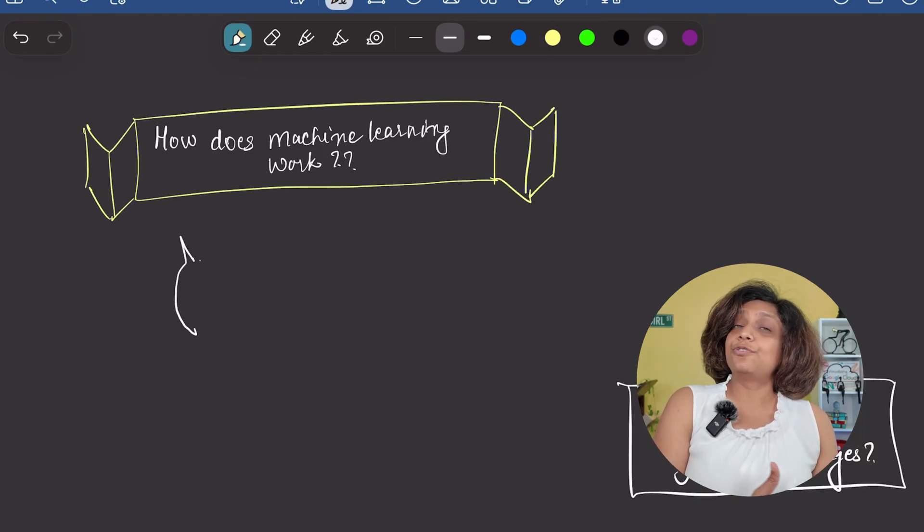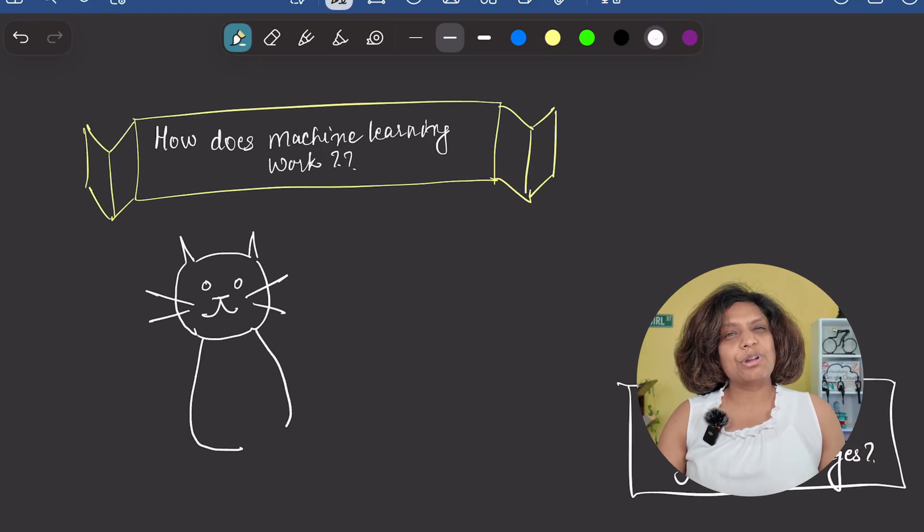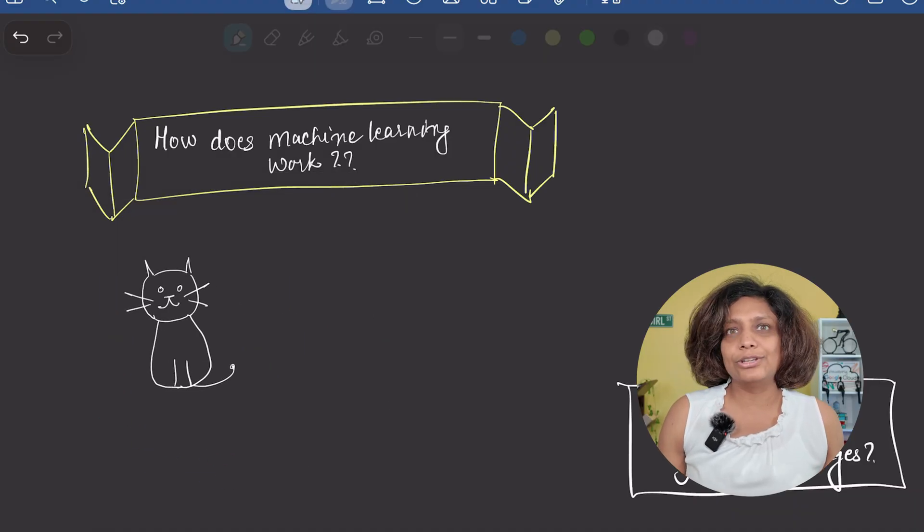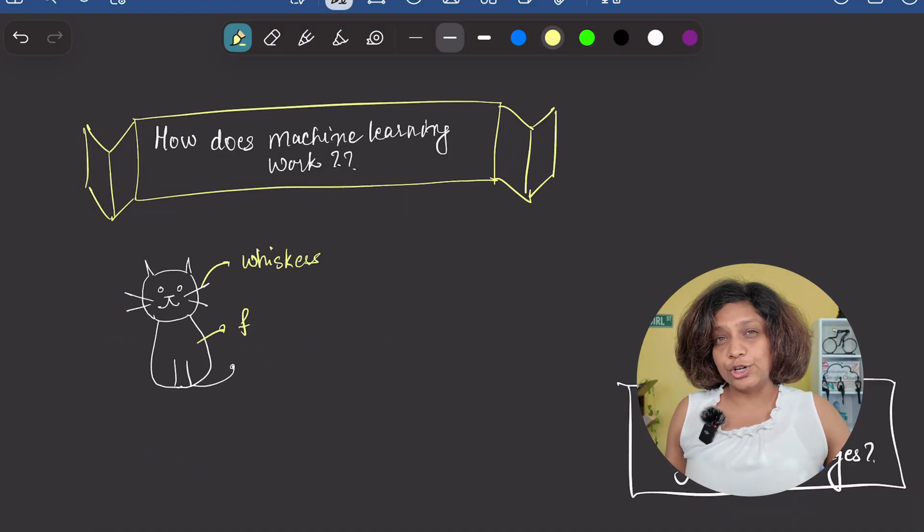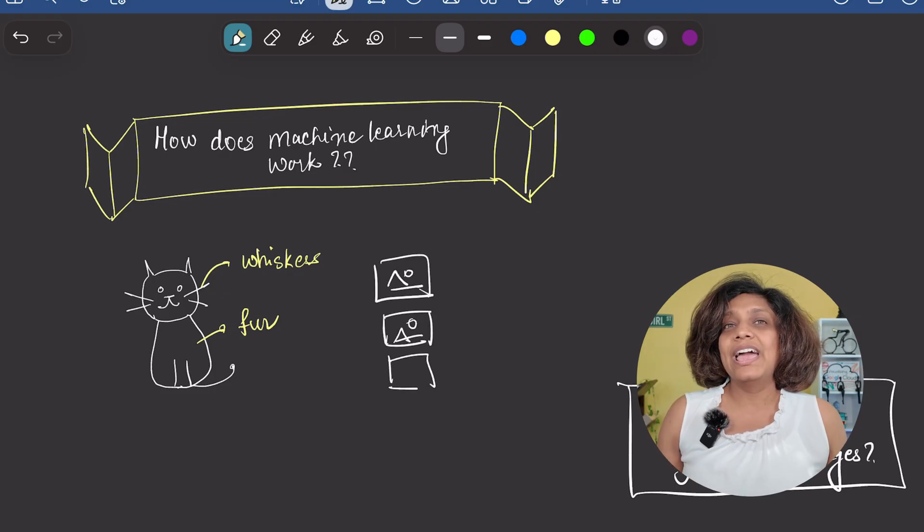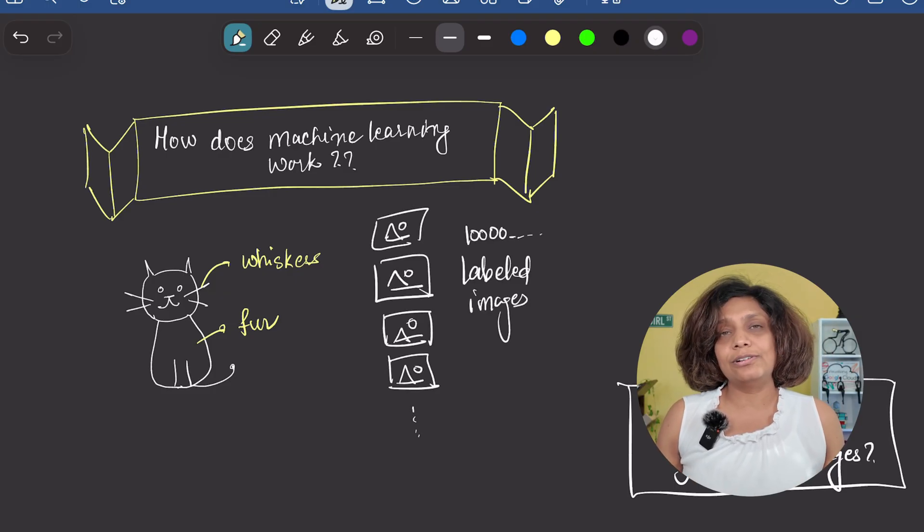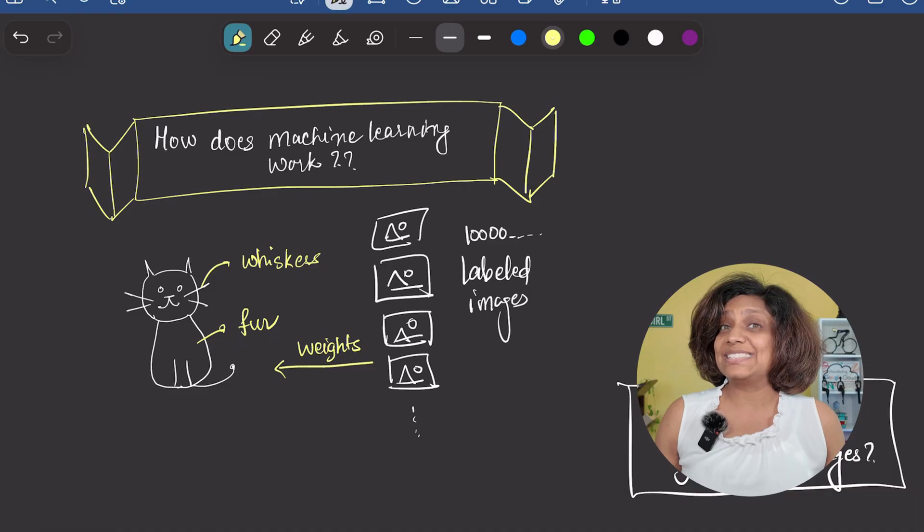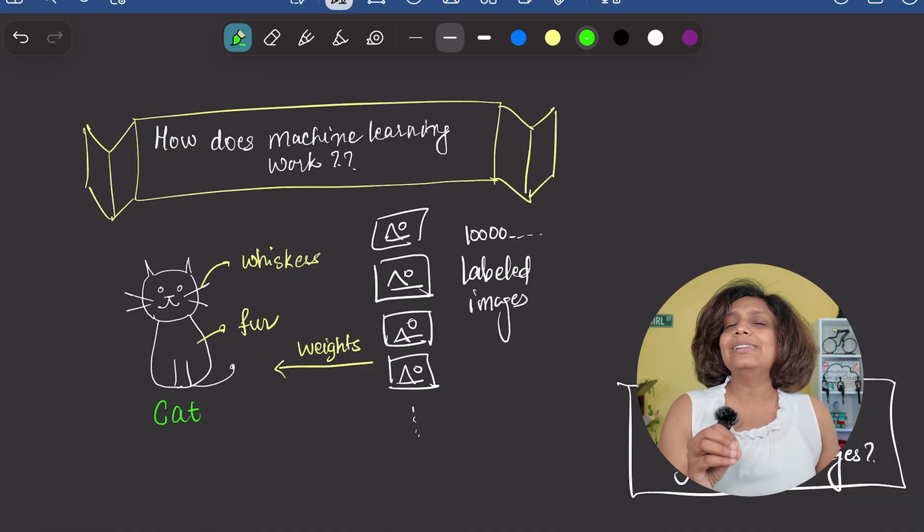Machine learning learns from data. To teach a model to recognize a cat, we don't write rules for whiskers or fur. We show it thousands of labeled photos and the model adjusts its internal parameters, called weights, until it can correctly identify a cat on its own.